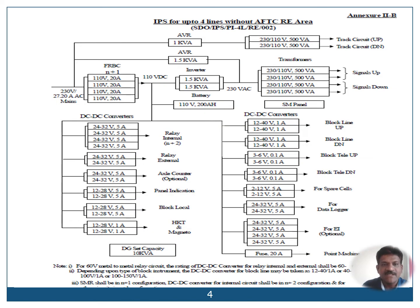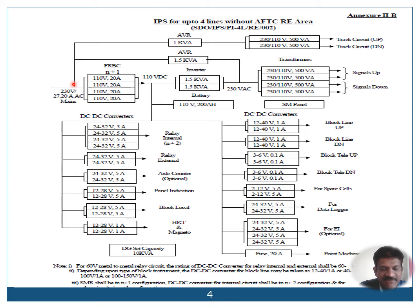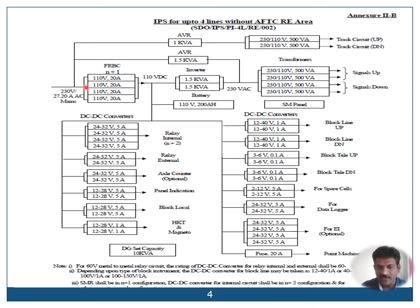Let us go through this simple flowchart. The input supply is 230V, which we are getting from the CLS panel. That 230V supply from the CLS panel is given to the LPD-SPD box. From the LPD-SPD box, we are getting this 230V supply as input, and we are using it at three places: one is input to FR, BCR, and SMRs; the second input is for AVR signals; and the third input is for AVR tracks.